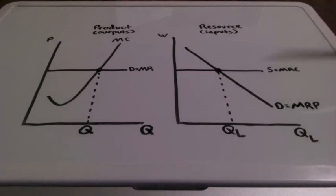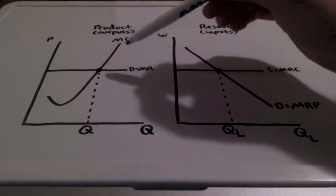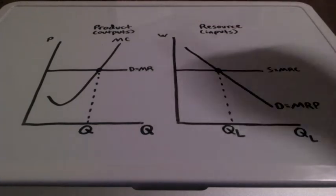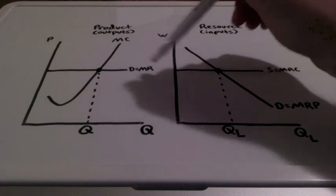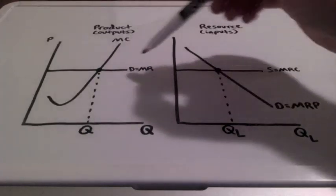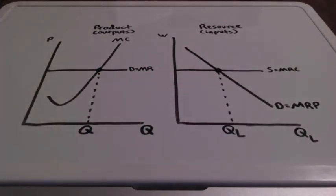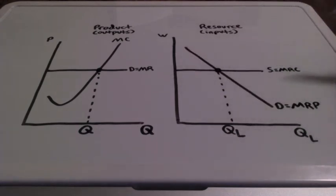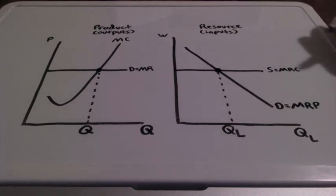When we're talking about perfectly elastic demand and perfectly elastic supply, we're dealing with an infinite number of substitutes. In the product market, when demand equals marginal revenue, the firm is referred to as the price taker. In the resource market, when we have an unlimited number of substitutes for the supply of labor, this would be referred to as being the wage taker.